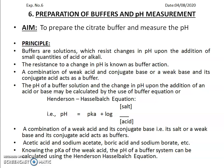Next, coming to preparation of buffers and pH measurement. Here we have to prepare citrate buffers and measure the pH of the solutions. Buffers are solutions which resist changes in pH upon addition of a small quantity of acid or alkali. This resistance to change in pH is known as buffer action. A combination of a weak acid and its conjugate base, or a weak base and its conjugate acid, acts as a buffer.